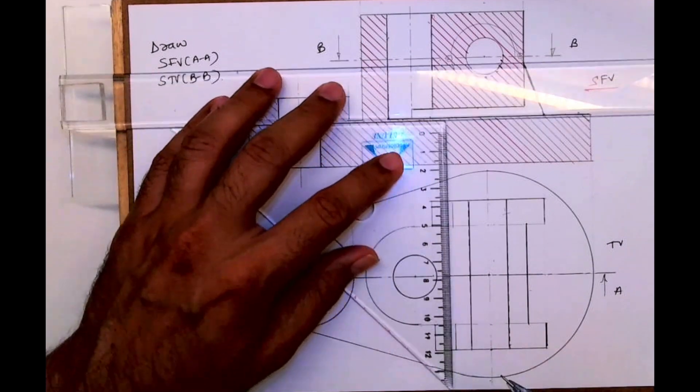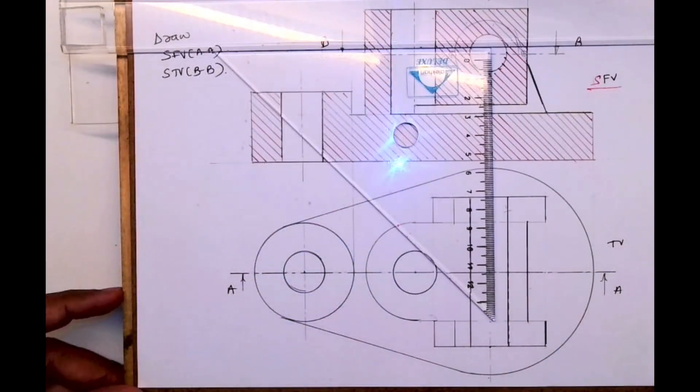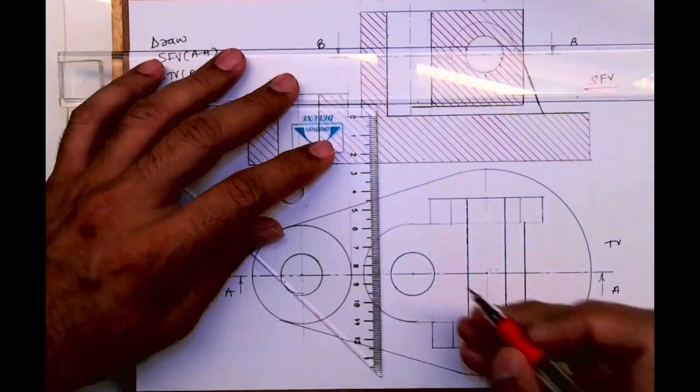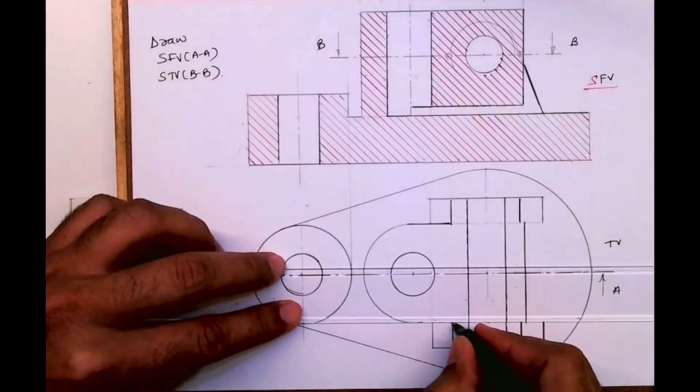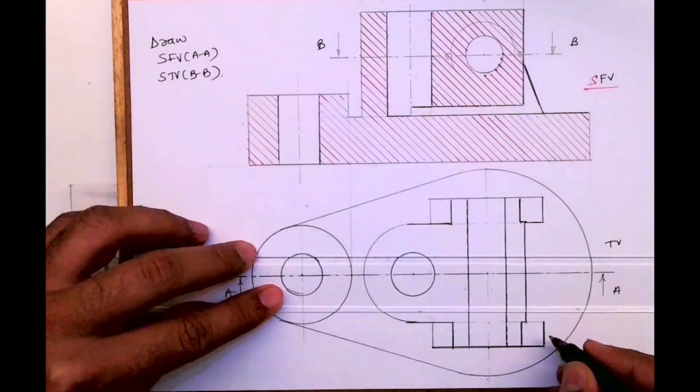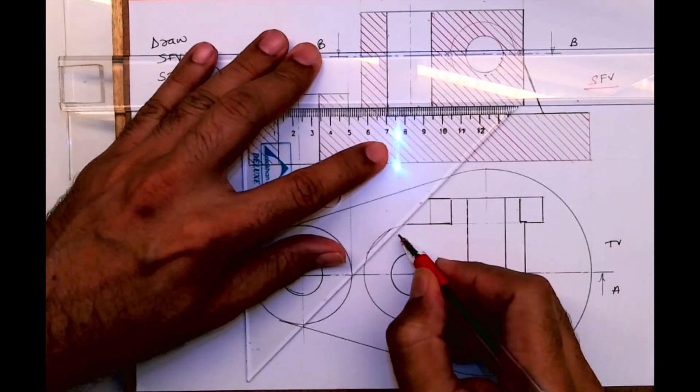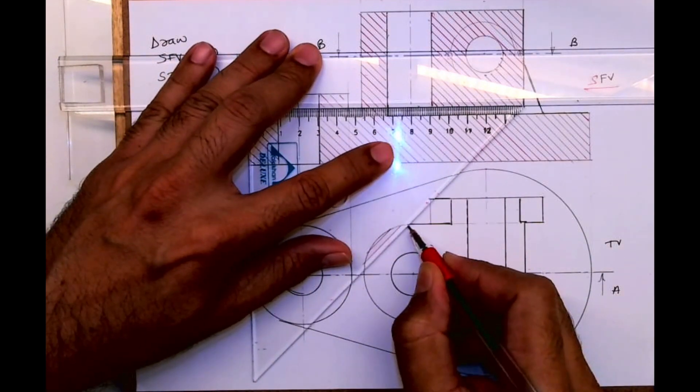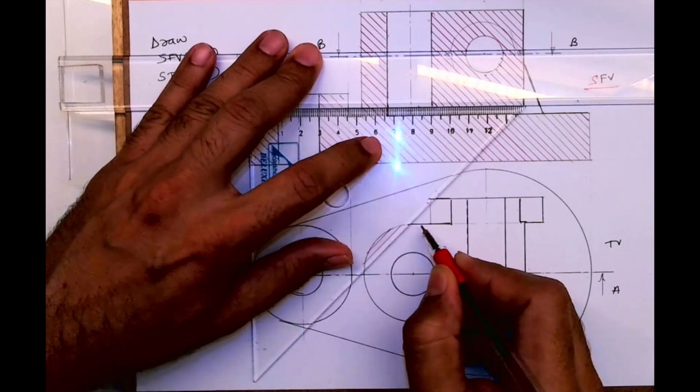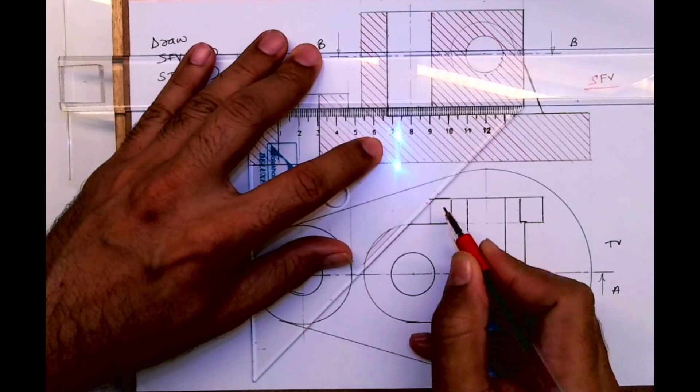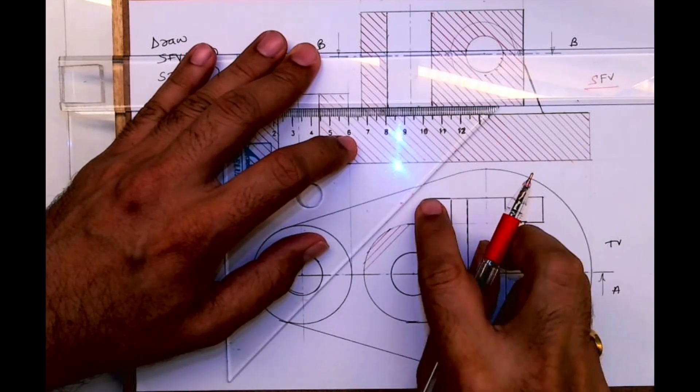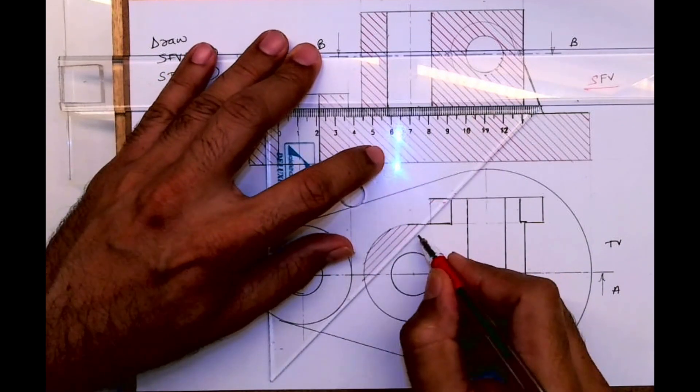So this will be hatched here. There won't be any hatching. I'm just repeating because that is not the cut portion.